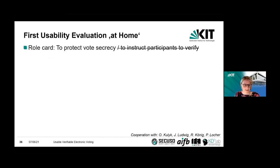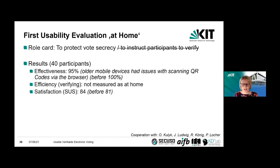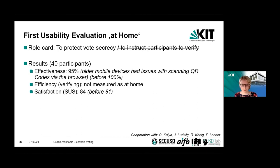Oxana conducted a first user study to evaluate the usability of this approach and get feedback. This time it was conducted at home because of the pandemic — participants received their study material and voting material and were asked to use their own equipment. In terms of results, only 95% could cast the vote — the problem was that some had very old mobile devices where it was not possible to scan the QR code from a browser. Efficiency could not be measured; the System Usability Scale was more or less the same as in previous studies.